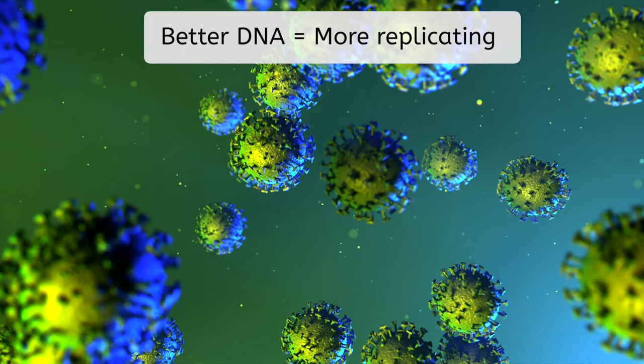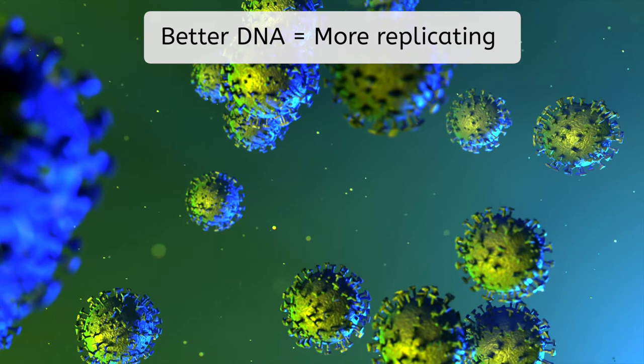Notice I didn't use the word survive because we haven't established that viruses are alive, but it's the same idea. Viruses have genetic diversity due to different DNA just like cells, so one virus particle may be more successful than another. And if it is more likely to be replicated and pass on the good DNA, then we can say that it has an adaptation.